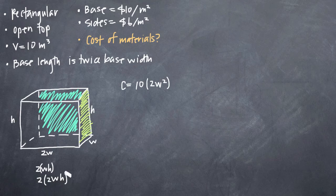If we add these together, we get the total area for the sides. And we know that we have to multiply that by the cost of the material for the sides, which is 6. So we can add these together because we want total cost or the sum of the cost. So plus 6 times 2 times wh plus 2 times 2wh.